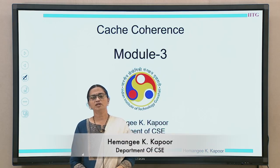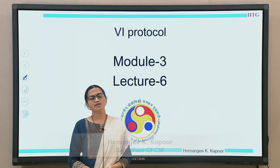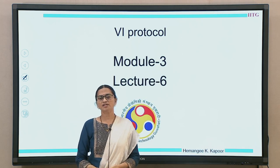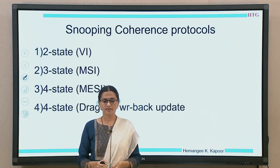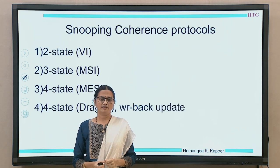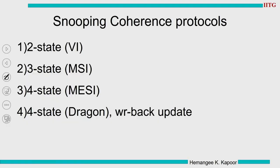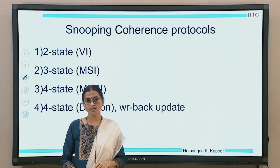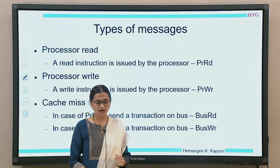Hello everyone, we are doing module three on cache coherence. Today we will start with cache coherence protocols. The first protocol is the VI protocol. We are going to see four types of cache coherence protocols: the two-state VI, the three-state MSI, the four-state MESI, and the four-state Dragon protocol. Today's lecture is going to cover the two-state VI protocol.